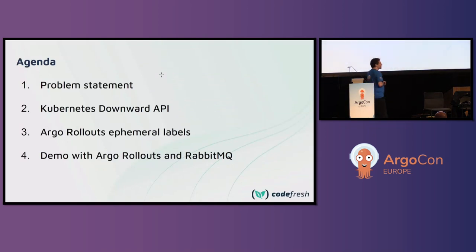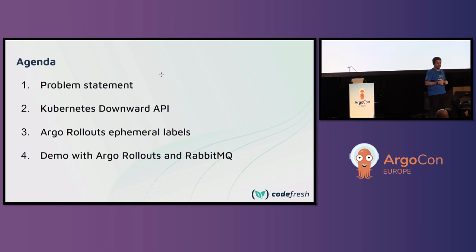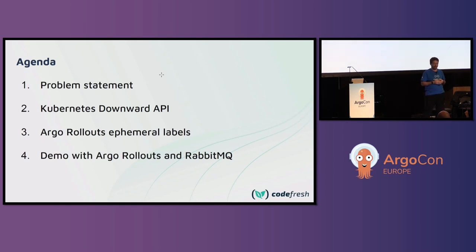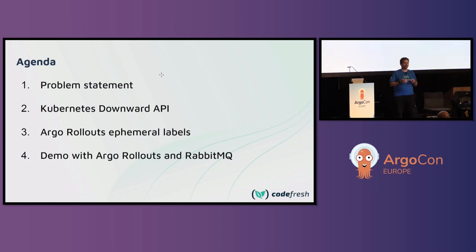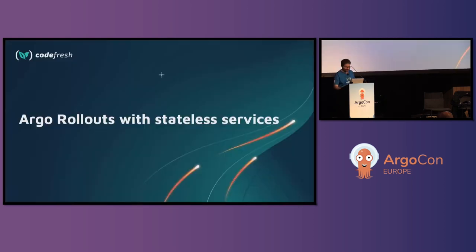What we're going to talk about today: first, we're going to explain the problem and why it's a problem. Then I'm going to tell you about some things you might not know — the Kubernetes Downward API and ephemeral labels. And then we will see a demo, which is why you are here — and hopefully it will work.